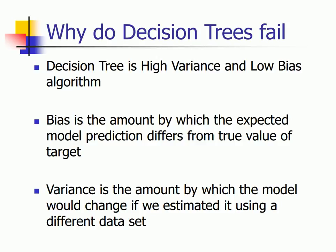Inherently, a decision tree is an algorithm with high variance and low bias. Bias is basically the amount by which the expected model prediction differs from the true value of your target variable. In simple terms, if your true output value is 0.8 and your prediction comes out to be 0.5, then your bias is 0.3. If you add up all the terms you get a cumulative bias of your model. So bias is basically the error term.